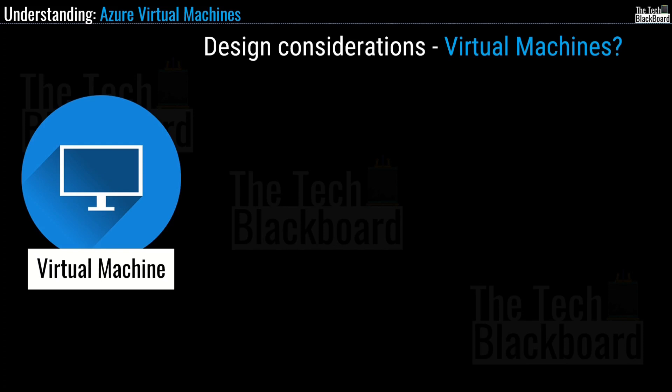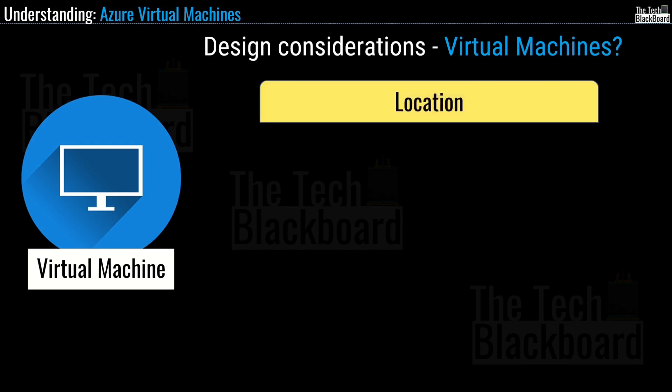The first consideration before creating any virtual machine is location. Like any other Azure resource, there are multiple geographical regions and locations around the world where you can create Azure virtual machines. In most cases, you should always deploy them close to your customers, or in a specific region if you have legal restrictions or compliance requirements. In the case of virtual machines, the location specifies where the virtual hard disk will be stored.